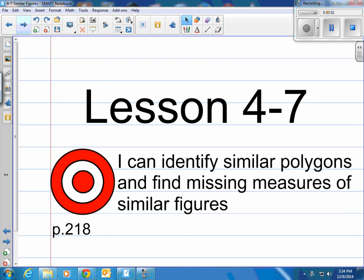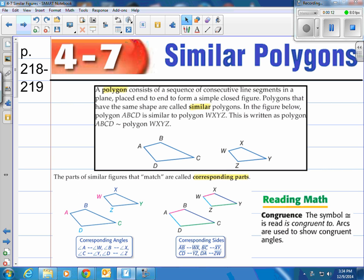This is a Friday Shoes production. This is lesson 4-7 in our books on page 218. Our target is I can identify similar polygons and find missing measures of similar figures. We will be using proportions from previous lessons.